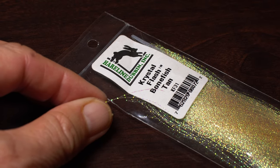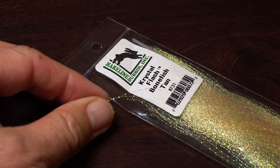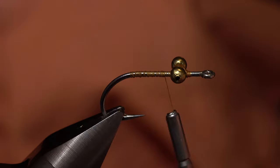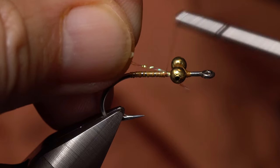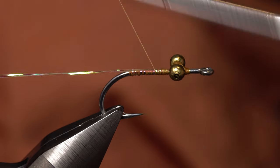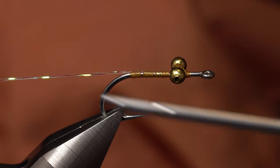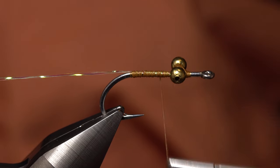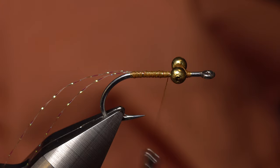Two strands of Bonefish Tan Crystal Flash are used to add just a little sparkle to the body of the fly. Lay one end of the strands against the near side of the hook and take thread wraps to secure it to the top of the shank, all the way back to the start of the hook bend. Then use your thread to create an evenly colored underbody.